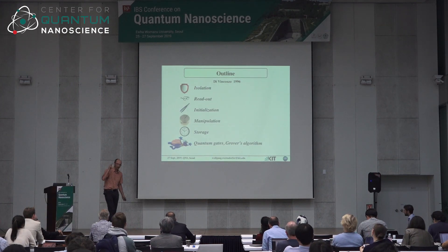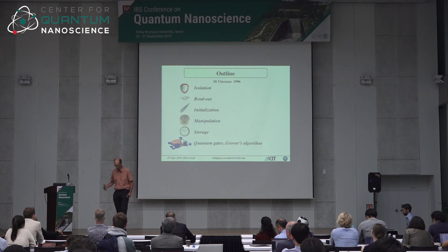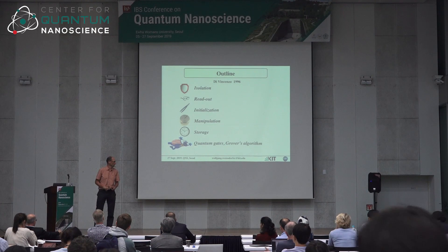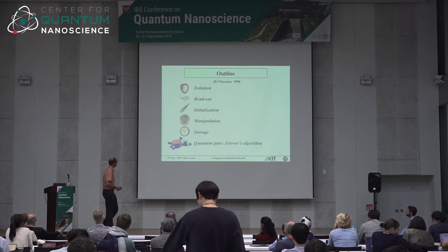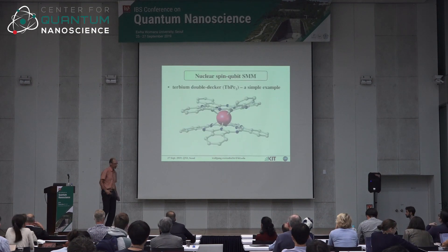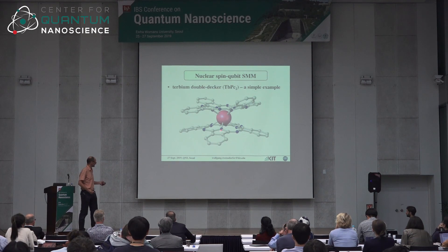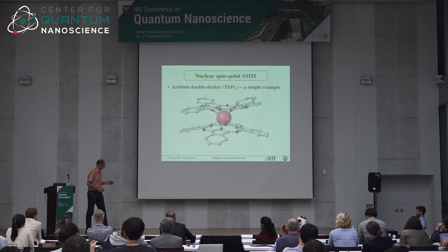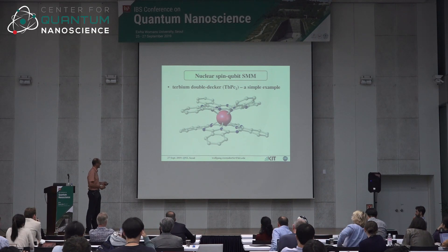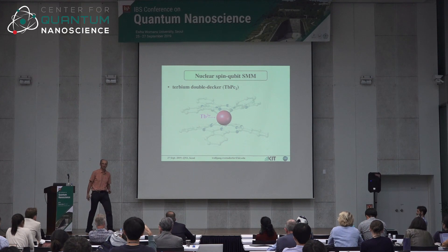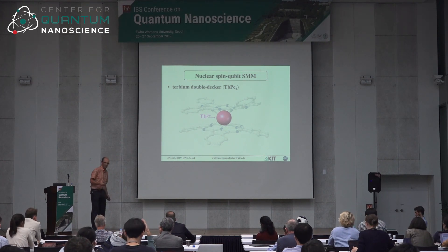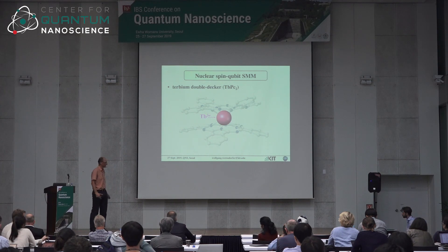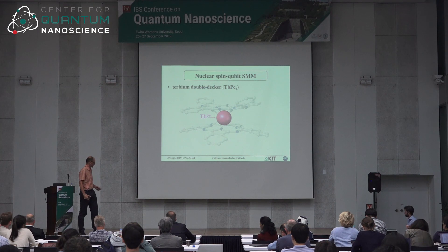What I want to show you is just one example of what we can do with this technique. I will apply this to one molecule and at the end show a little bit of outlook. The molecule we are going to discuss is the following. The physicist will call this a double-decker: a lanthanide ion squeezed inside two phthalocyanine ligands. The ion we discuss here will be a terbium-3+ ion, and we want to do quantum information processing with the nuclear spin sitting on this ion.